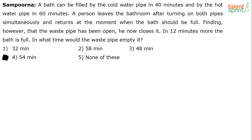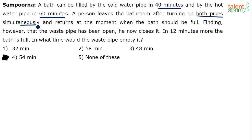If you read and understand the question, the important parts are: there is a bathtub which can be filled by the cold water pipe in 40 minutes and by the hot water pipe in 60 minutes. So there are two pipes here — pipe A and pipe B. One pipe takes 40 minutes to fill the tub and the other takes 60 minutes. A person leaves the bathroom after turning on both pipes simultaneously.